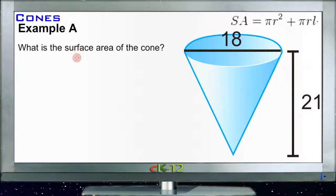For Example A, we need to find the surface area of a cone. I went ahead and put the formula for surface area in the top right corner. To find the surface area of a cone, we need to take pi times the radius squared plus pi times the radius times the lateral length or slant height.